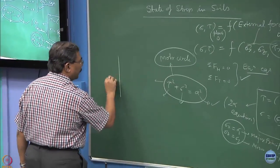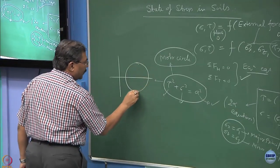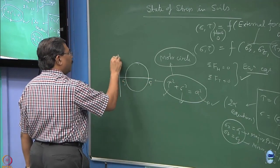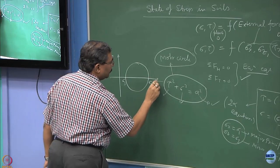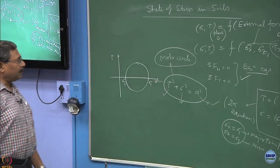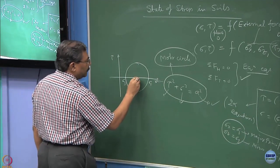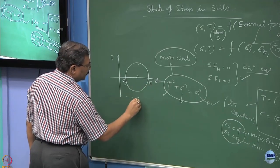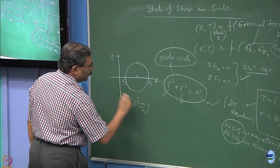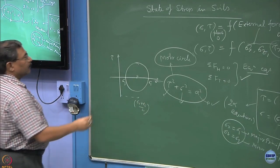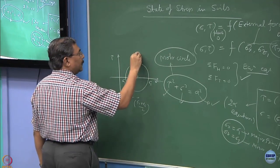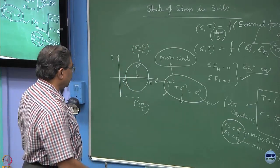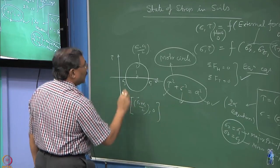This is the situation where you have this is as sigma 1 and this is as sigma 3. What we do is we plot it as a function of tau and sigma on the tau sigma axis. This is the center O. By virtue of this, it becomes sigma 1 plus sigma 3 by 2, the coordinate of the center and the radius is sigma 1 minus sigma 3 by 2. This is the coordinate of the center and this is the radius.